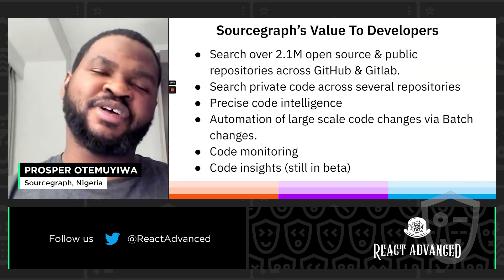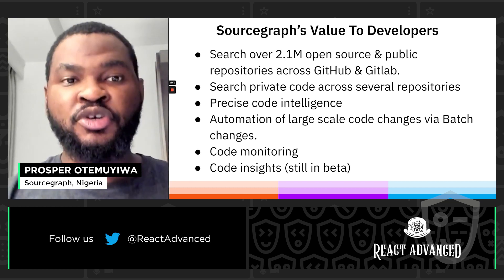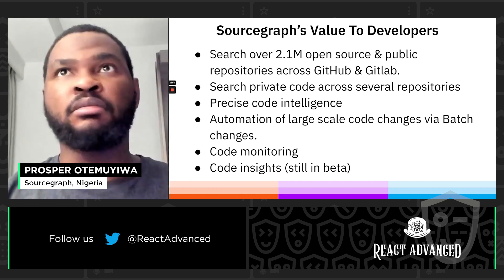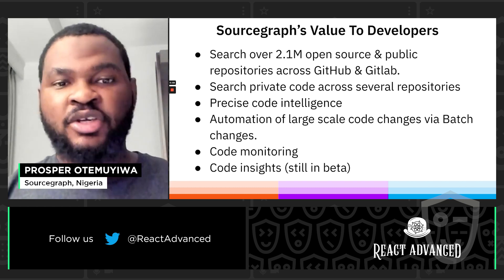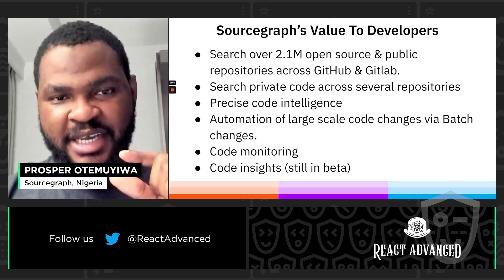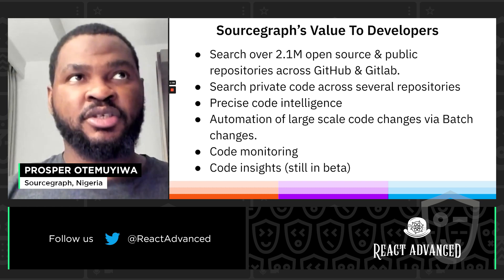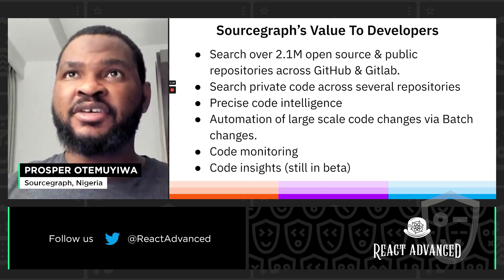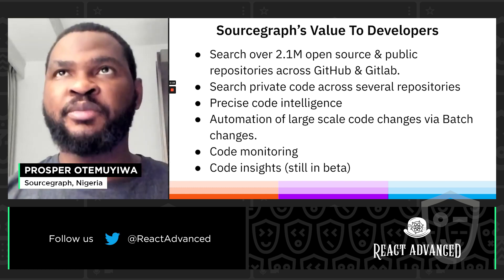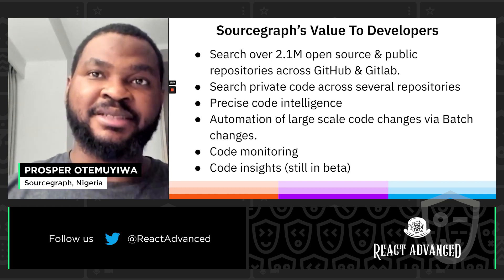Let's talk about Sourcegraph's value to developers. Sourcegraph has indexed over 2.1 million open source repositories, so you can search to find code from open source repositories across GitHub and GitLab. It also allows you to search private code across several repositories, and provides precise code intelligence on your code files. It also allows you to automate large-scale code changes with a feature called batch changes, which lets you batch many changes instead of submitting several pull requests for similar or the same changes. We also have code monitoring and code insights — I'll talk about that later.